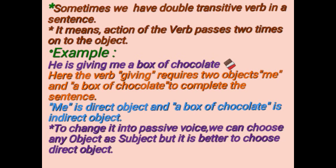For example: 'He is giving me a box of chocolate.' Here the verb 'giving' requires two objects — the first object is 'me' and the second object is 'a box of chocolate'. Both are used to complete the sentence. In the sentence, 'me' is the direct object and 'a box of chocolate' is the indirect object. To change it into passive voice, we can choose any object.